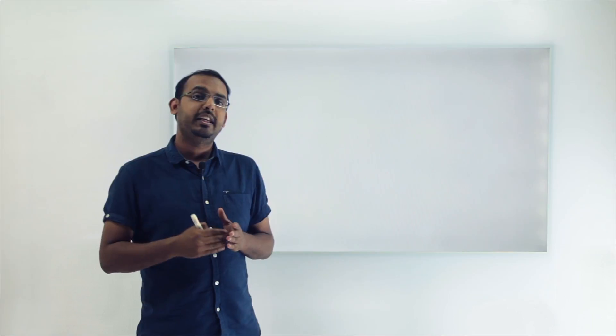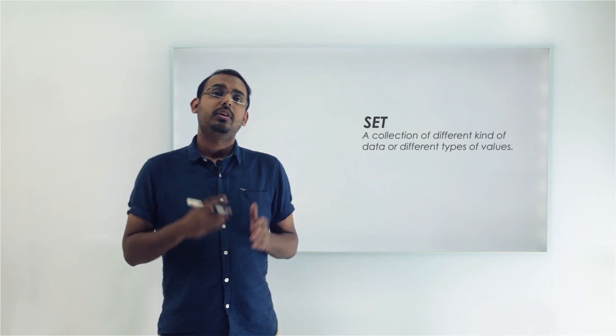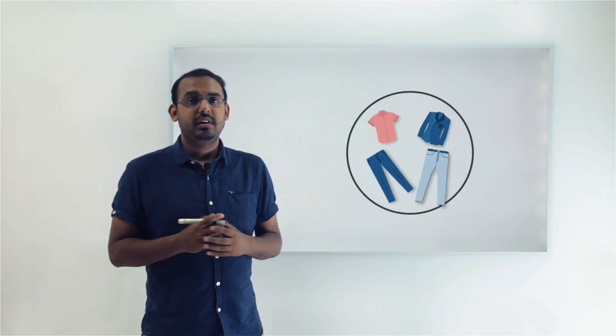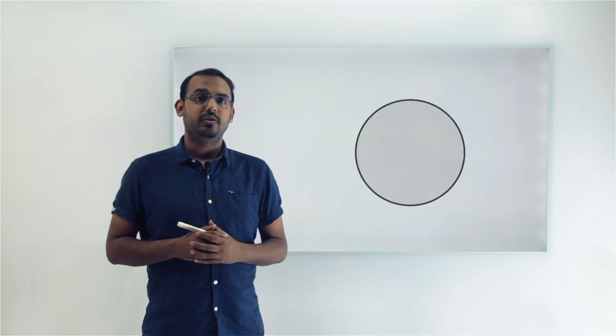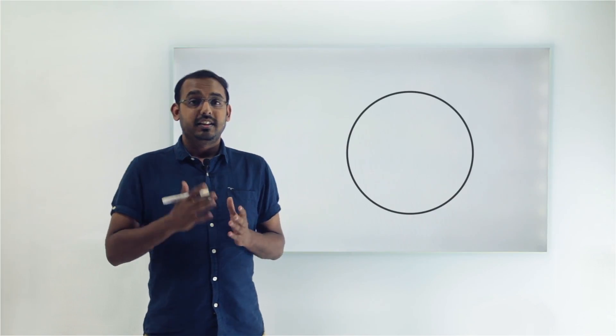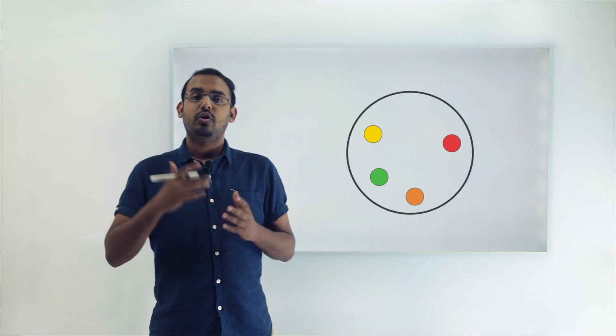These are the terms we need to be aware of to better understand probability. The first term is a set. A set is basically just a collection of different kinds of data or values. For example, all the clothes in your wardrobe can form a set, the numbers 1 to 10 can form a set, and the seven colors of a rainbow can also form a set.